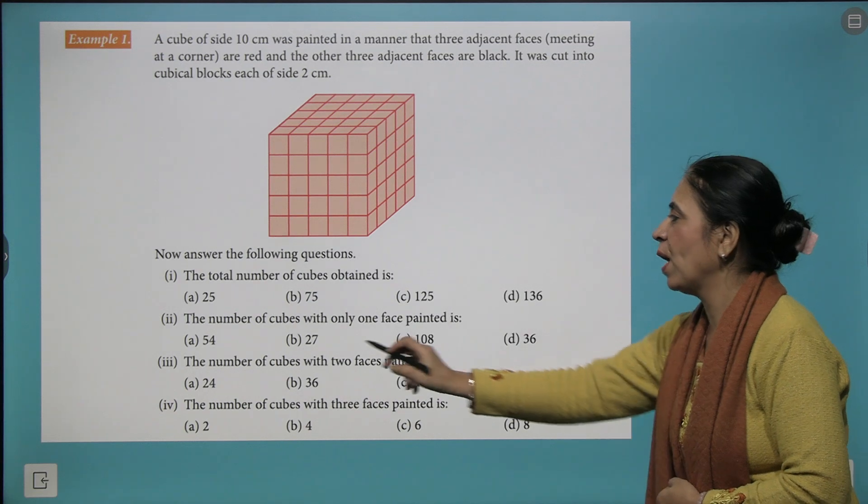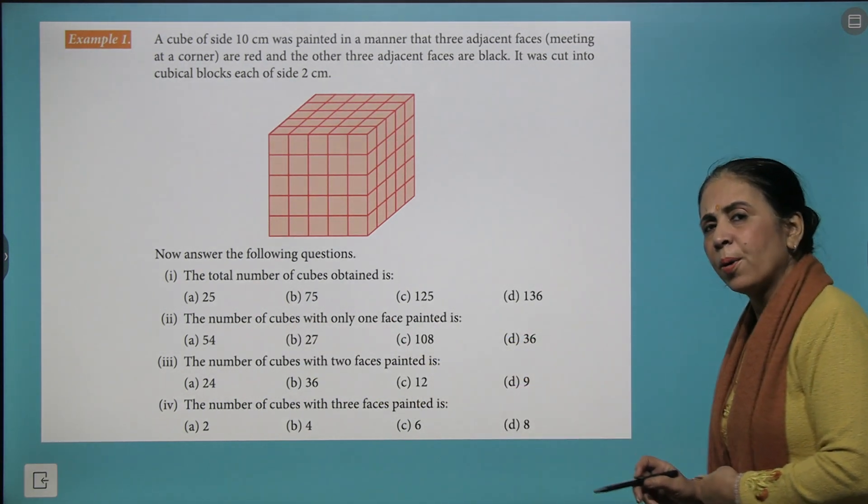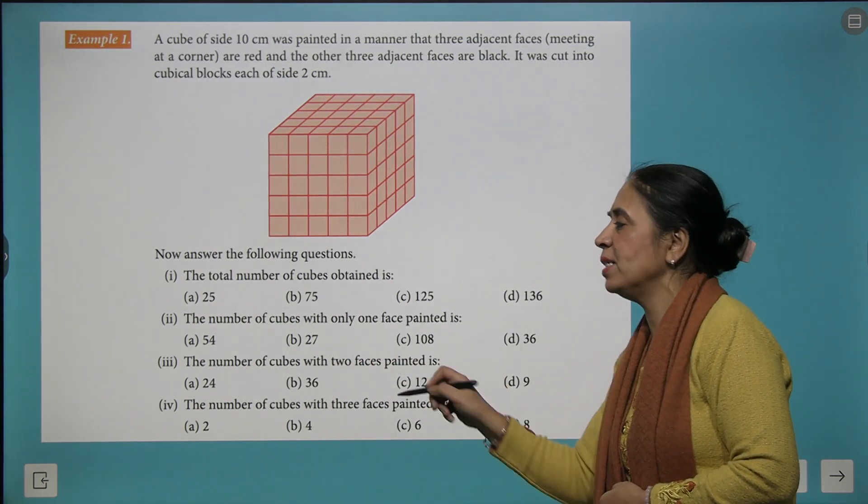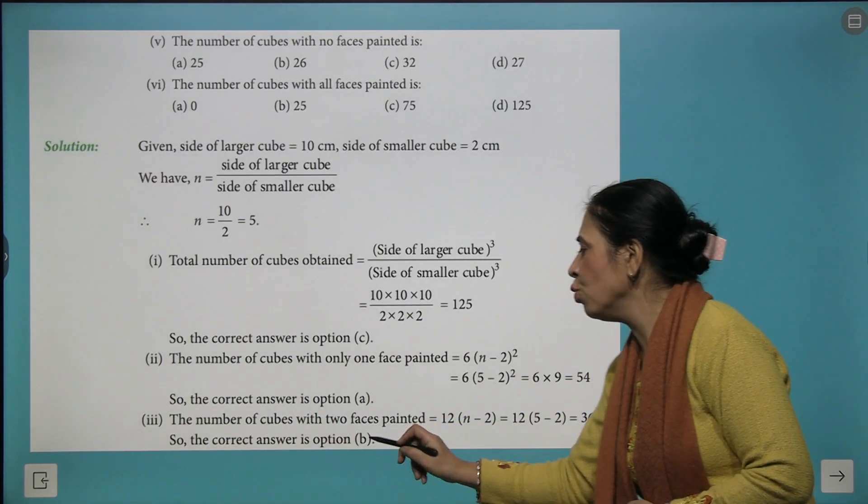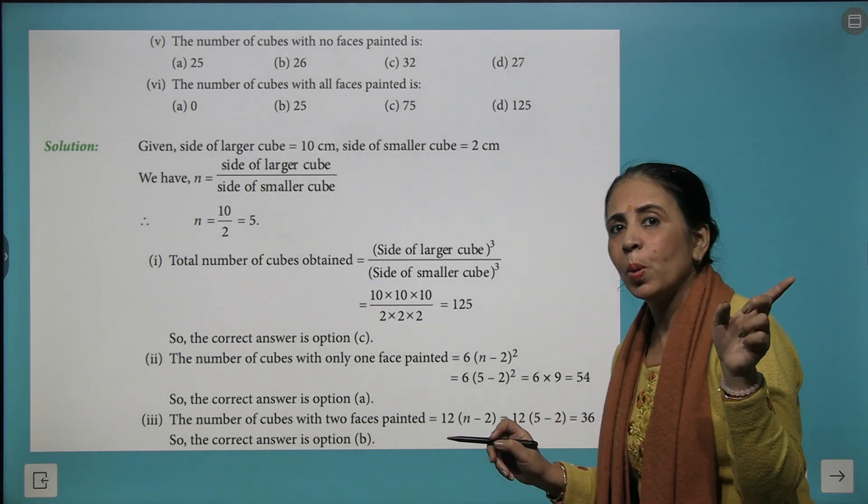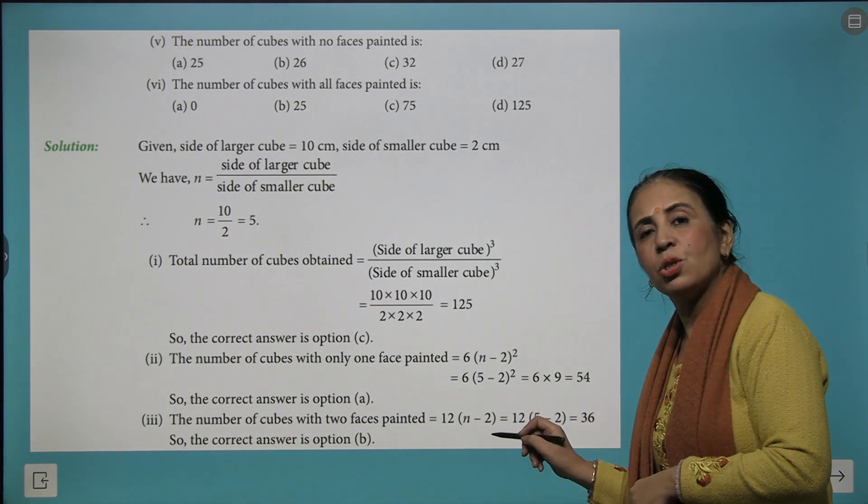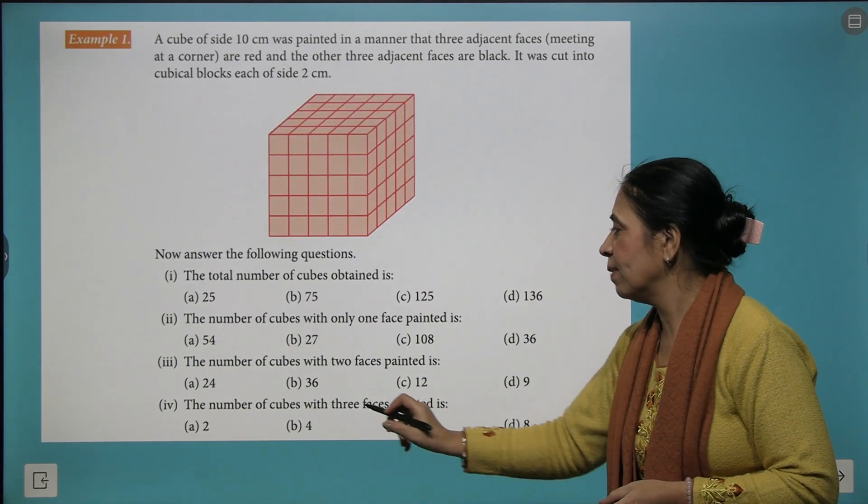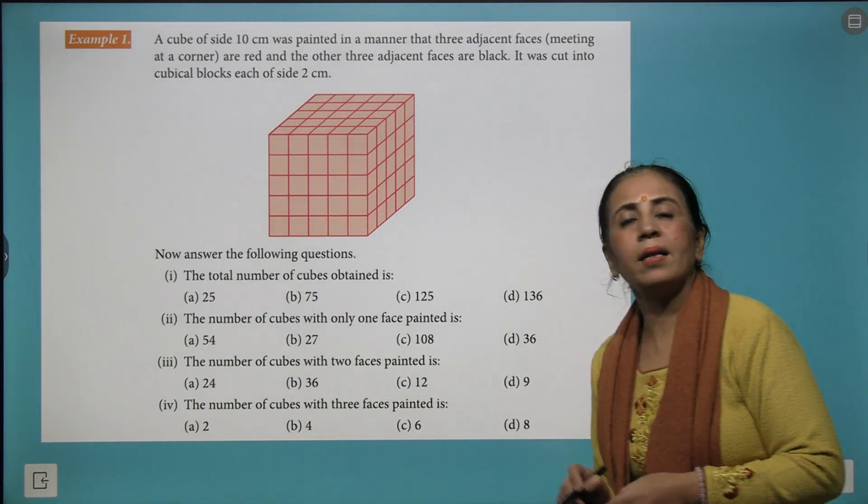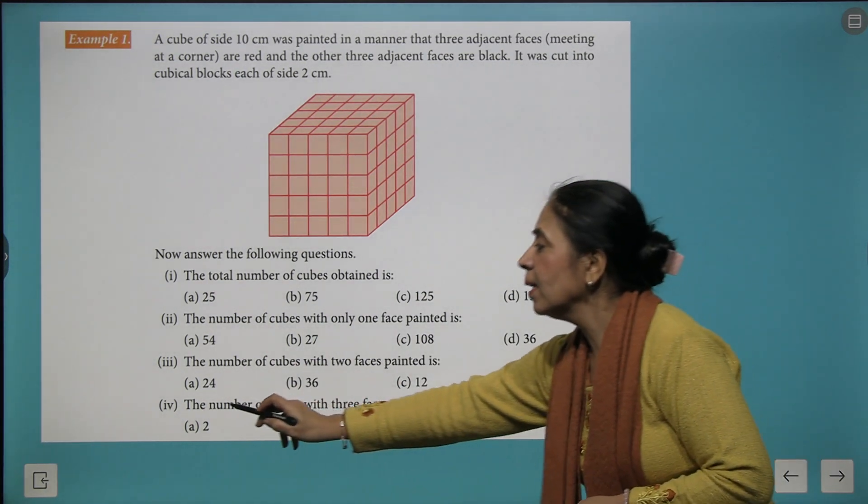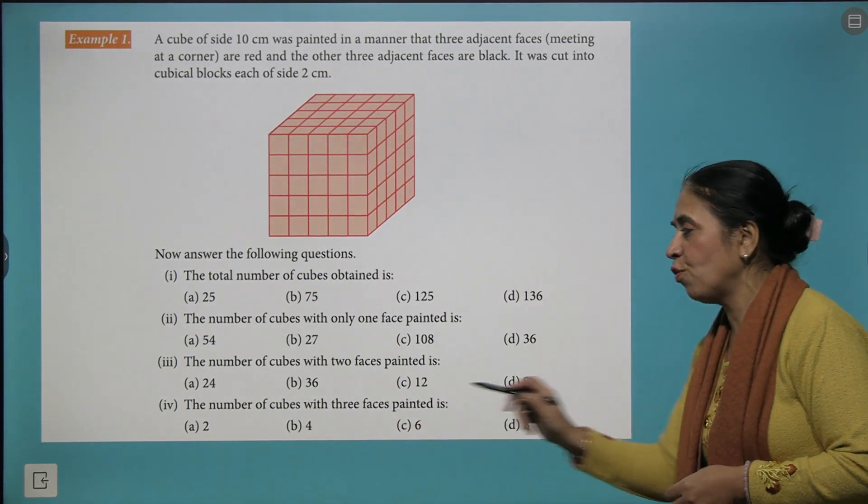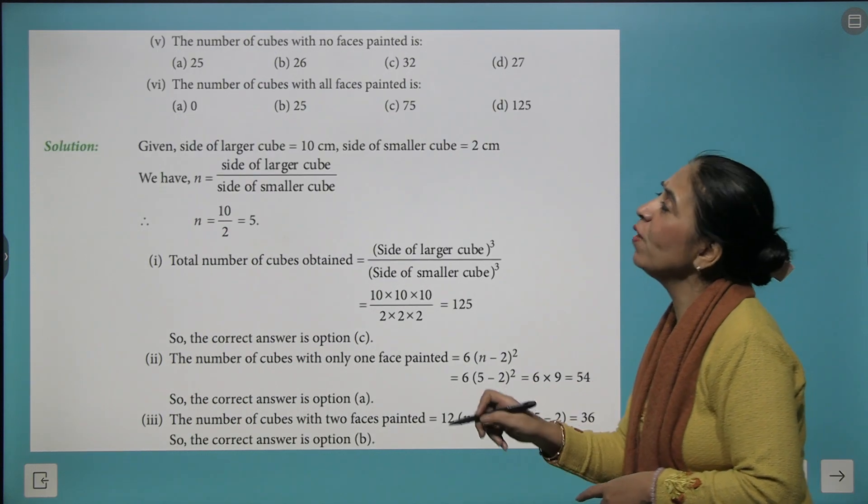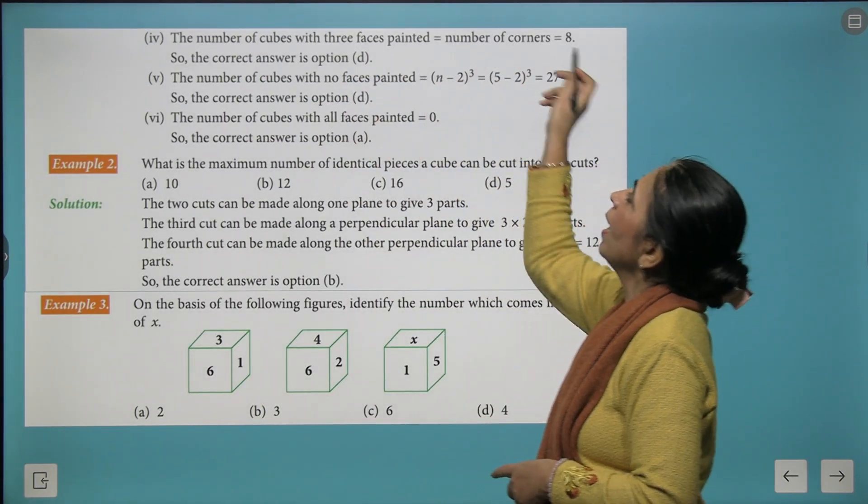We got 54 as the right answer. Read the next question now, the number of cubes with 2 faces painted. So looking for 2 faces painted, we had a formula 12 times n minus 2, so 5 minus 2 is 3, so 12 times 3 gives you 36 and 36 is your correct answer. The next question is number of cubes with 3 faces painted and we had a fixed answer for it, that is 8.